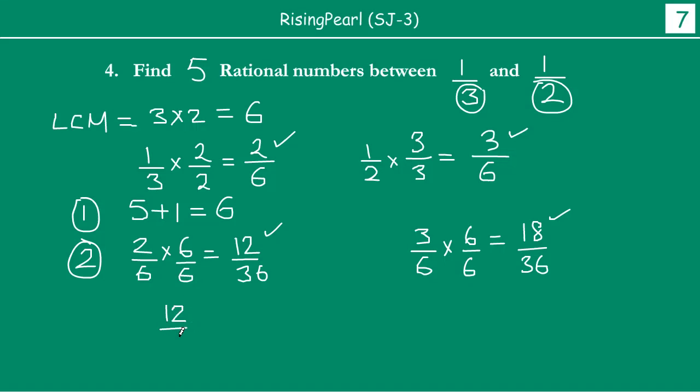We write 12/36 and 18/36. You will see that the denominator is the same, 36 and 36, and numbers are increasing from 12 to 18. If we keep the same denominator and steadily increase the numbers from 12 to 18, then we can write numbers in between these.